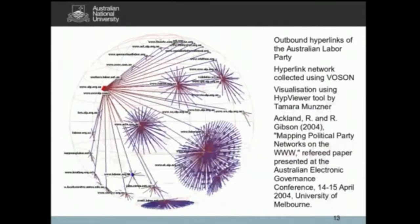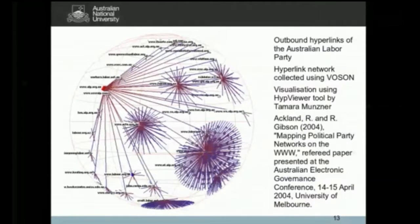I came across software called HypeViewer, created by Tamara Munzner at Stanford. I'm not someone who knows much about hyperbolic space, but I do know how to get software working. I got HypeViewer compiled and running and started using it to visualise hyperlink networks. This screenshot shows a hyperlink network where the root node is the ALP, the Australian Labor Party, showing the hyperlinks directed out from the ALP website to other sites.